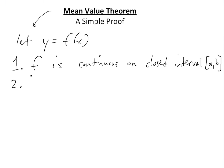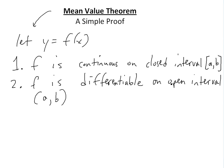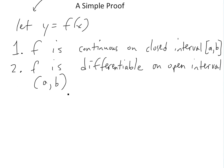Condition two is f is differentiable on the open interval a and b. This just means that you have to have a derivative everywhere between these two. Open means it doesn't have to include a and b, so the derivative at these endpoints doesn't have to exist, but the value f there has to exist.